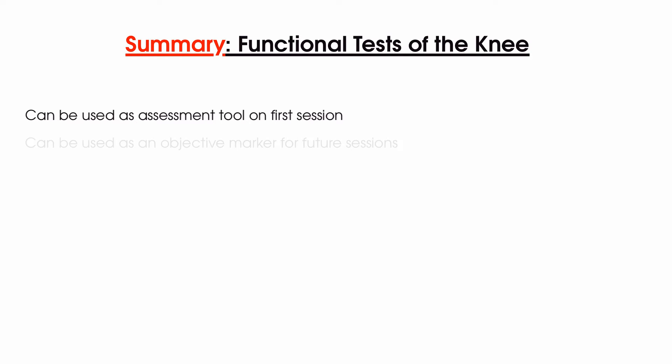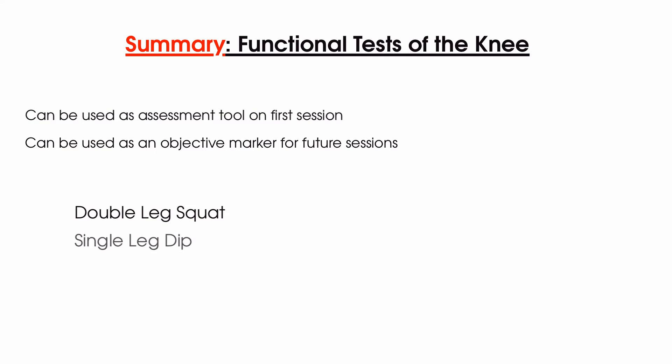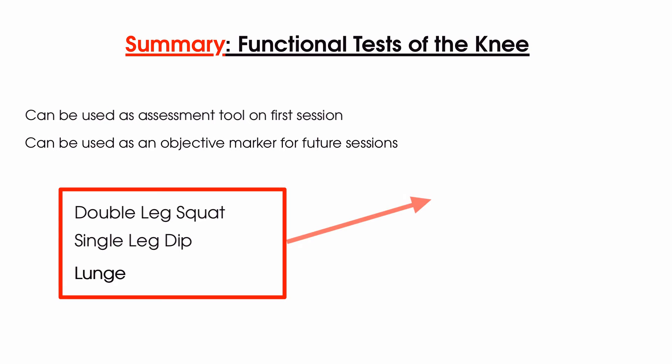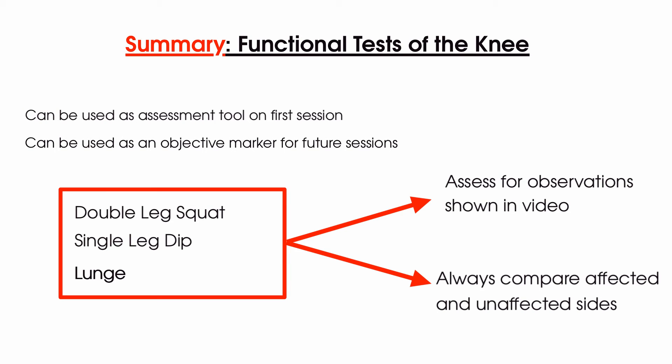So to summarise this video on functional tests of the knee joint. Use your functional tests as an assessment tool to gauge your patient's function, as well as an objective marker which you can compare in later sessions. Today we have looked at a double leg squat, a single leg dip and a lunge. Look for the different observations that we have taken you through in this video for each test to help you recognise any differences between your patient's affected and unaffected sides. You may choose to use these functional tests as part of your assessment, but you can also use them in future sessions to see whether or not your patient's condition has progressed or regressed. You can also give these movements to your patient as specific exercises for them to do at home so that they can really work on the issues that you've identified during your assessment. Thank you once again for watching us here on Clinical Physio and we'll see you again soon.